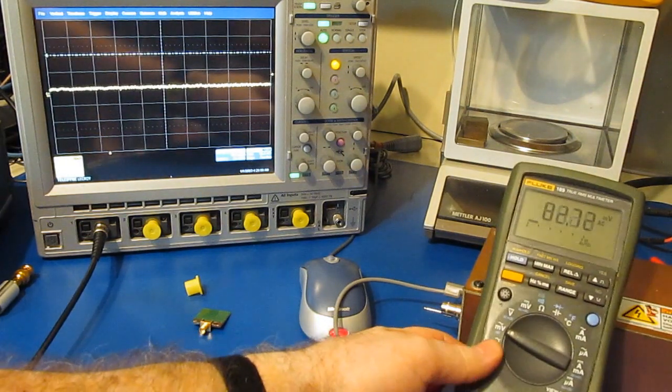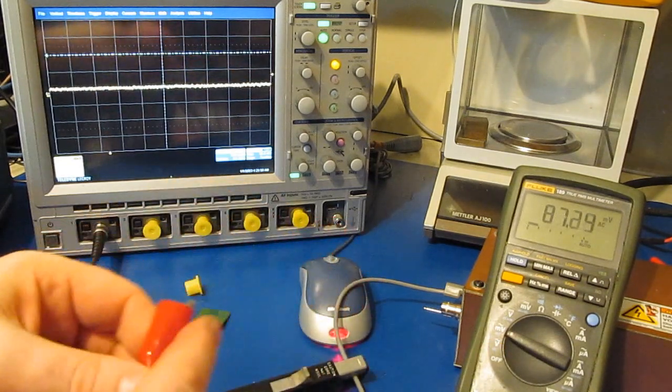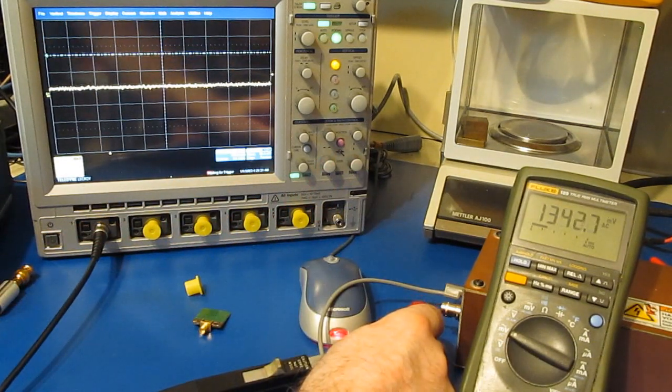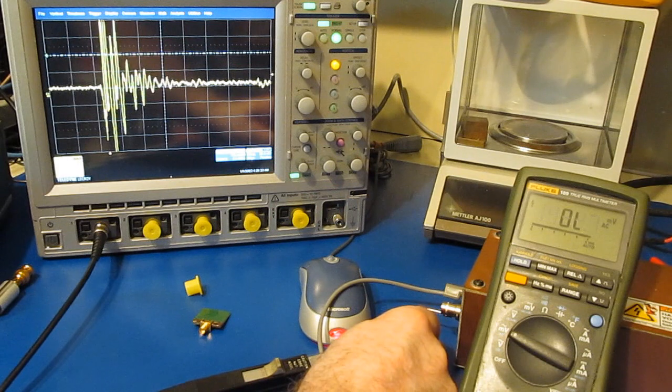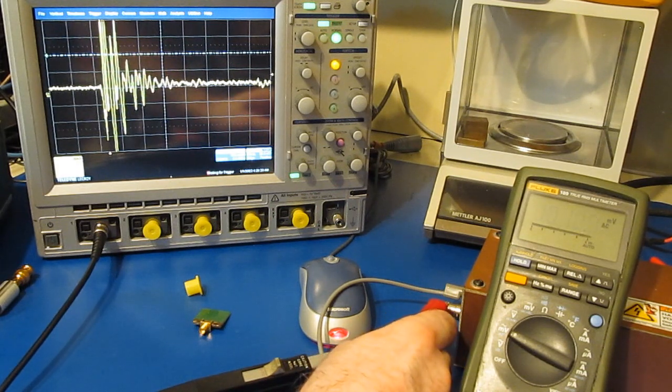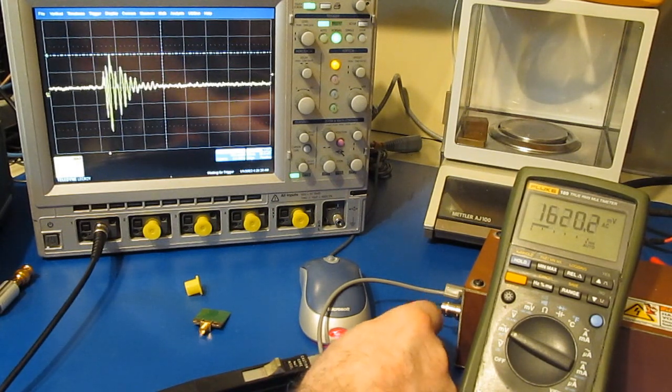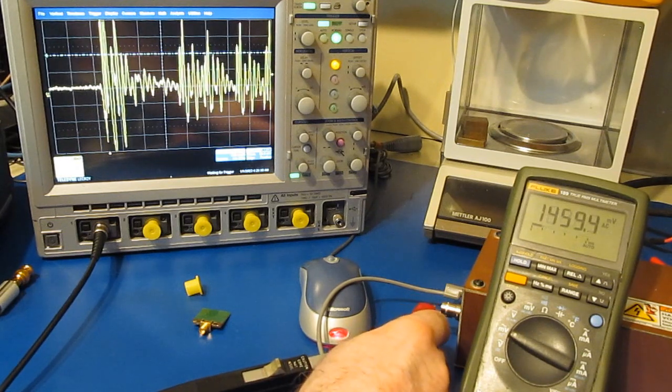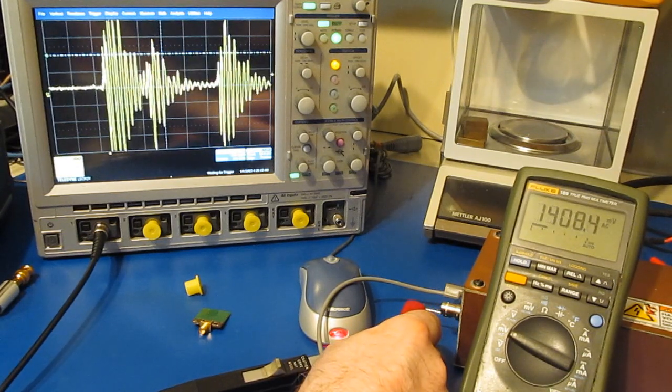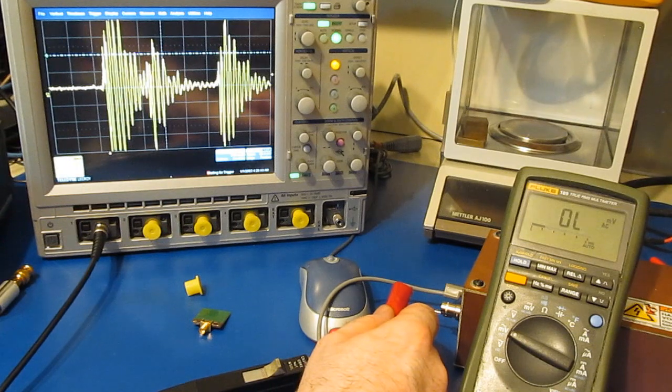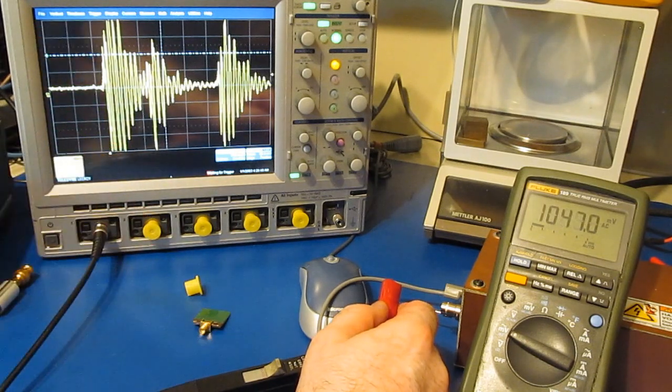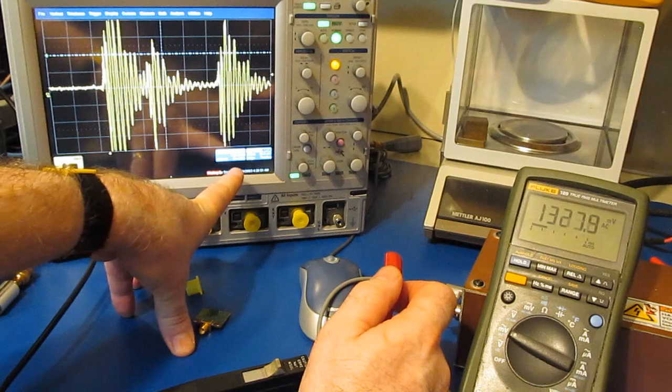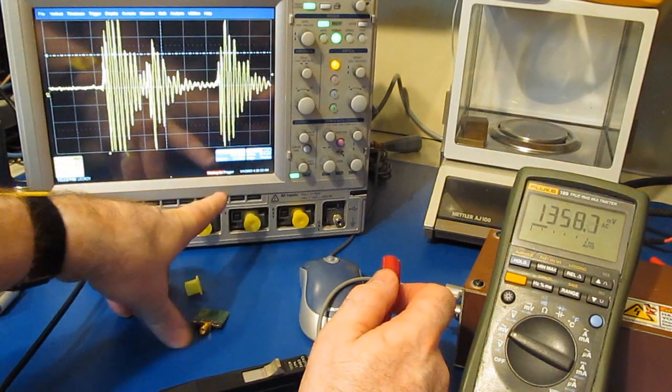We're going to leave our meter set to the AC millivolt mode. So here comes our charge. That's right off the screen. And here's our discharge. Let's try it again. There's our charge and here's our discharge.